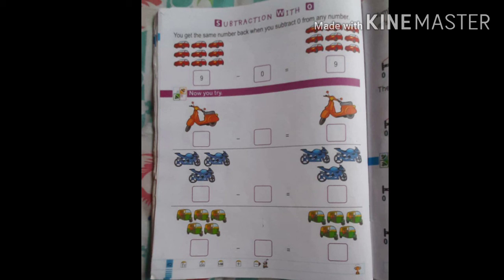You get the same number back. Agar ham zero se subtract karthate hai, vohi number mujhe wapas mil jata hai. Kitnay auto wapas mil gaya hai? Five. One, two, three, four, five.